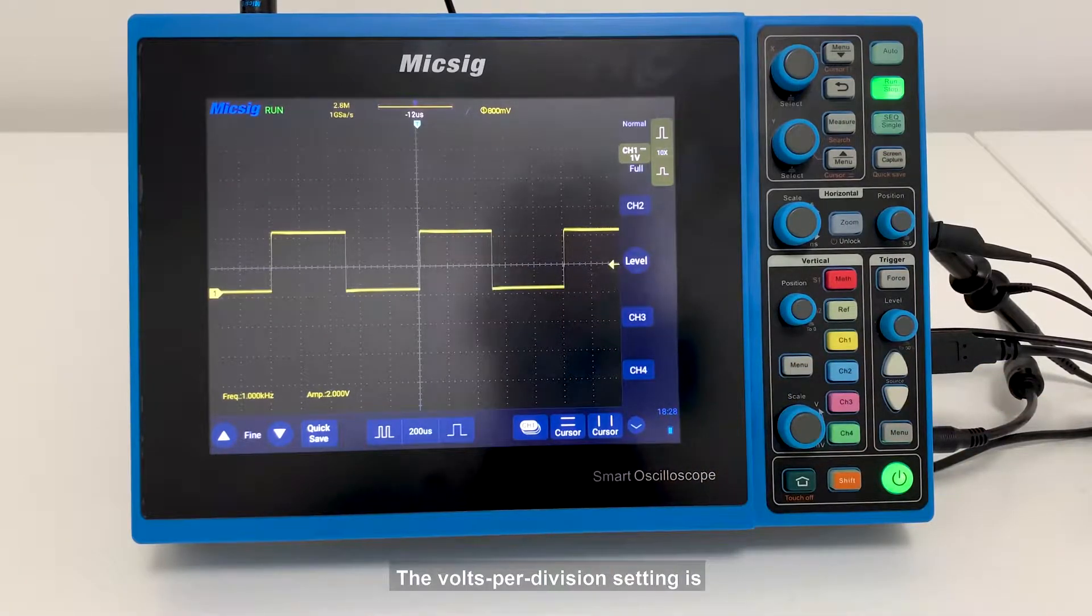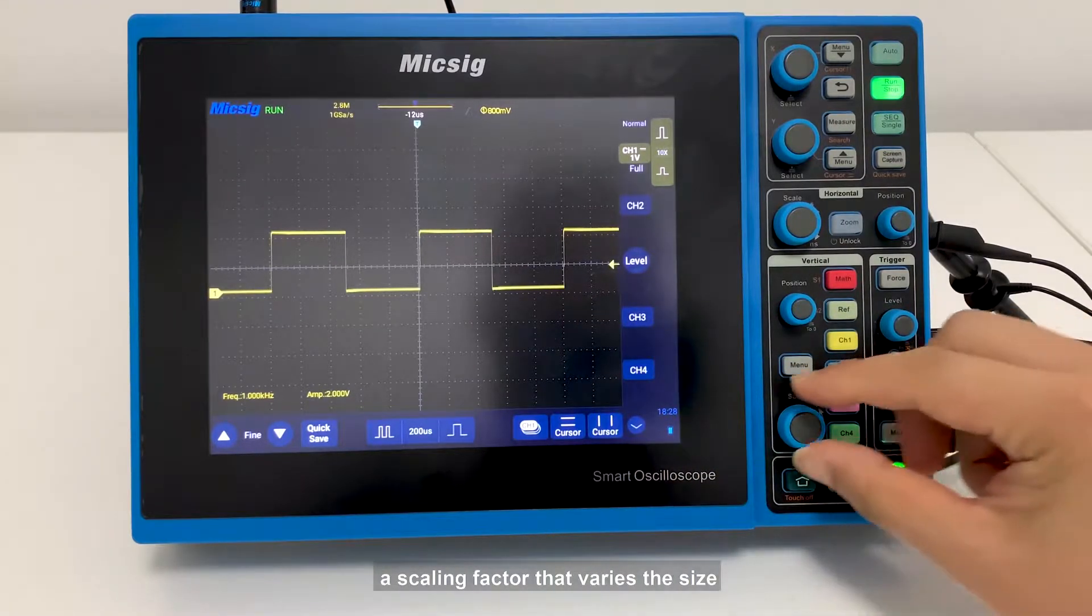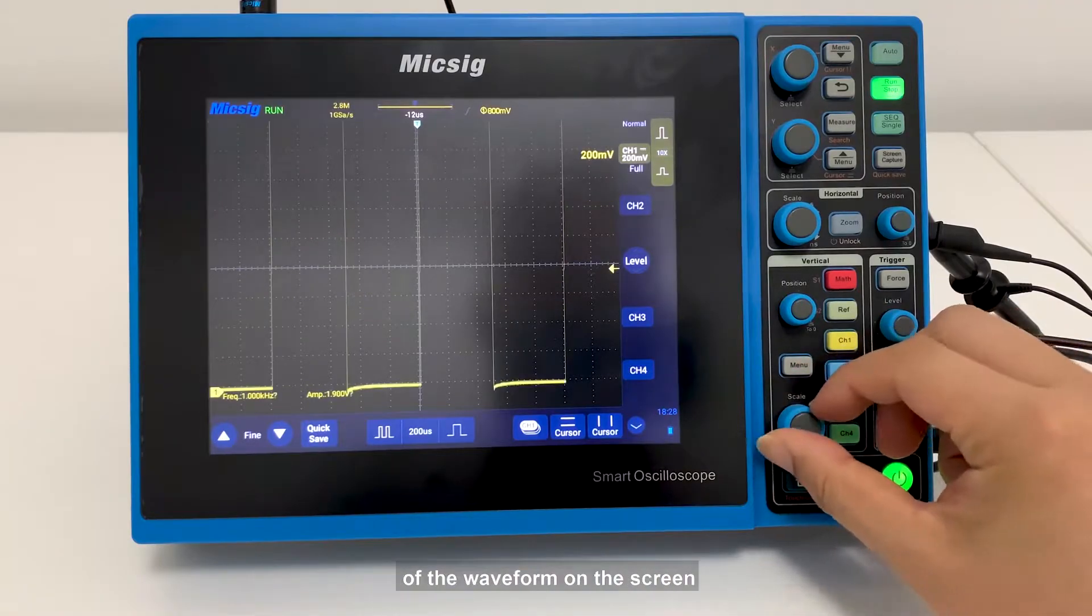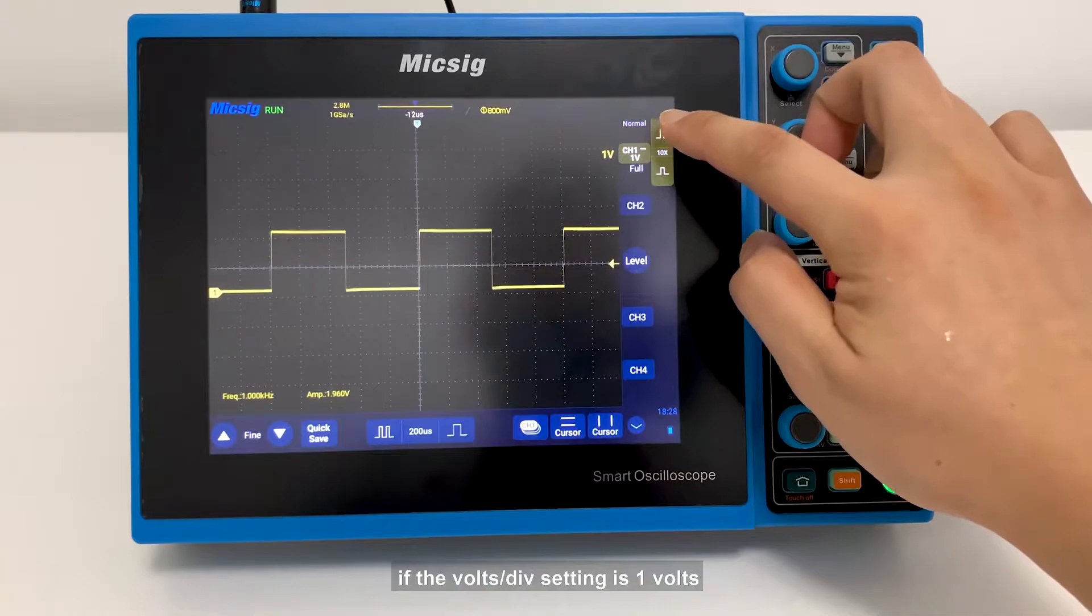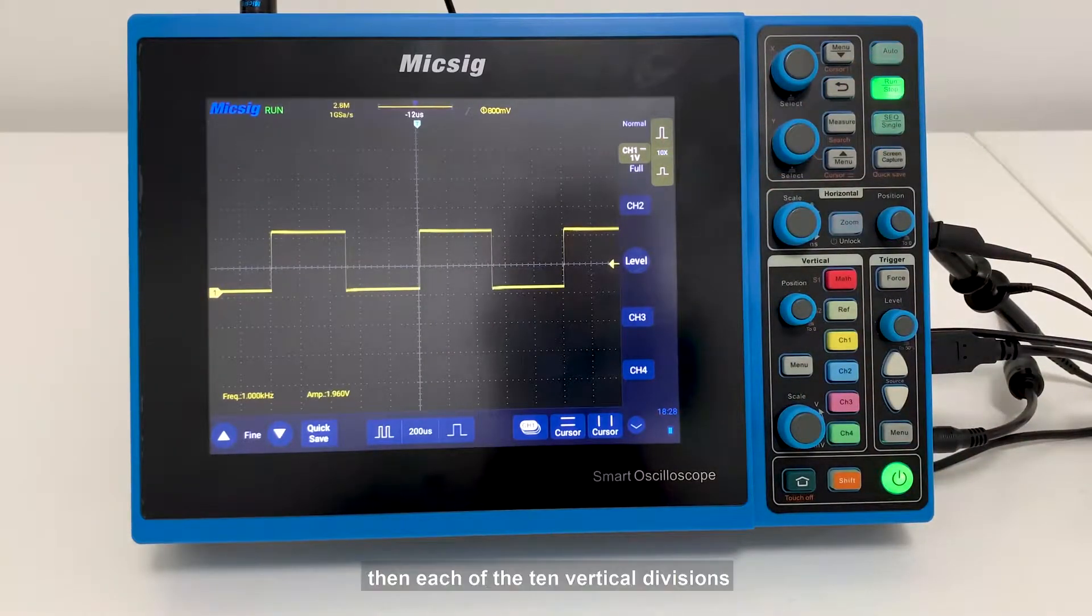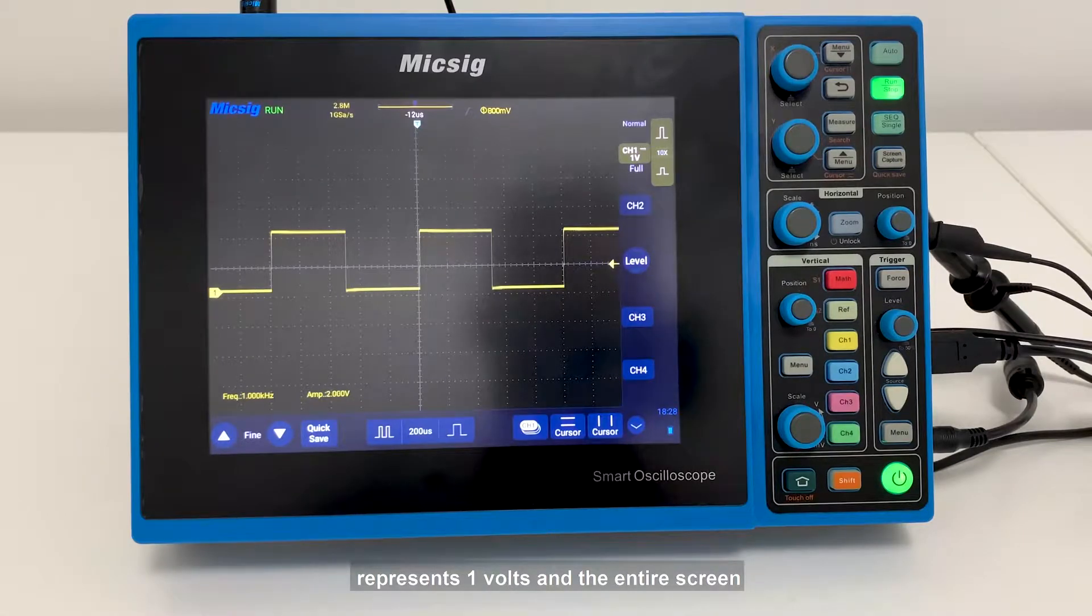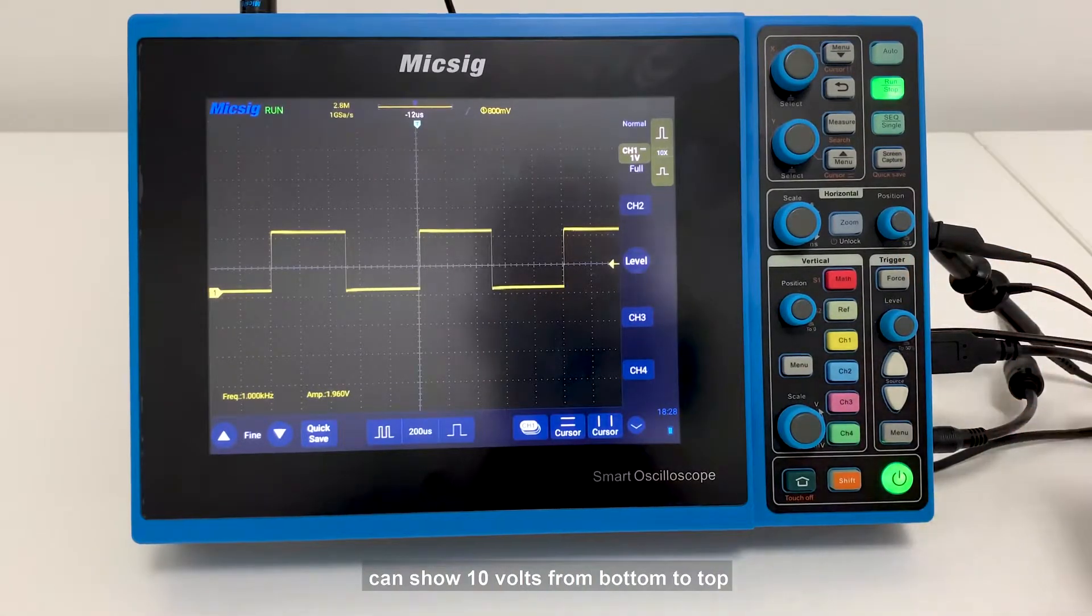The volts per division setting is a scaling factor that varies the size of the waveform on the screen. For example, if the volts per division setting is one volt, then each of the ten vertical divisions represents one volt, and the entire screen can show ten volts from bottom to top.